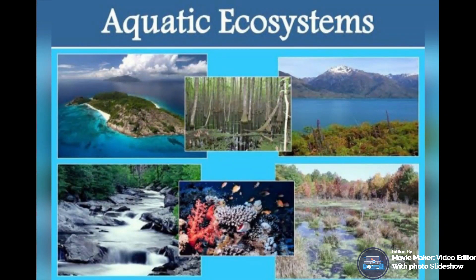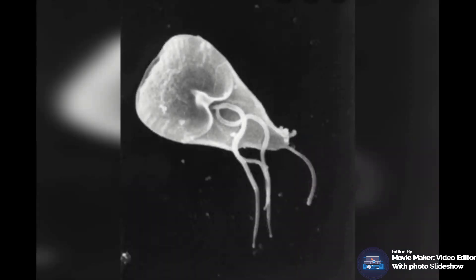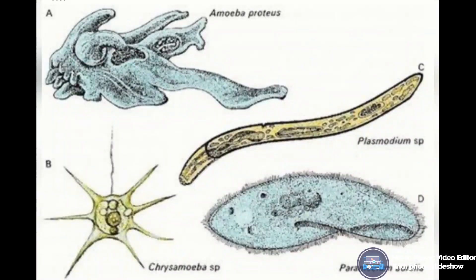Microorganisms are found everywhere in the environment and play a very important role in countless natural processes. In the aquatic environment, the role of microbes in aquatic ecosystems is to capture the sun's energy through photosynthesis. Marine microbes play very important roles in the earth's system, influencing our climate as major primary producers in the ocean, dictating much of the flow of marine energy and nutrients, and providing sources of medicines and natural products.